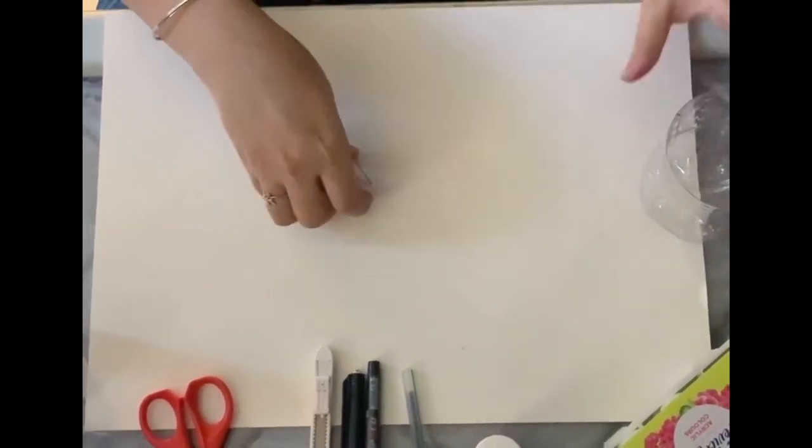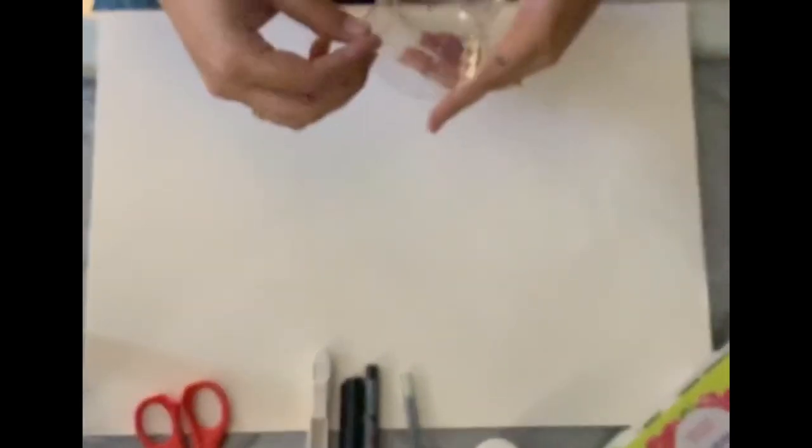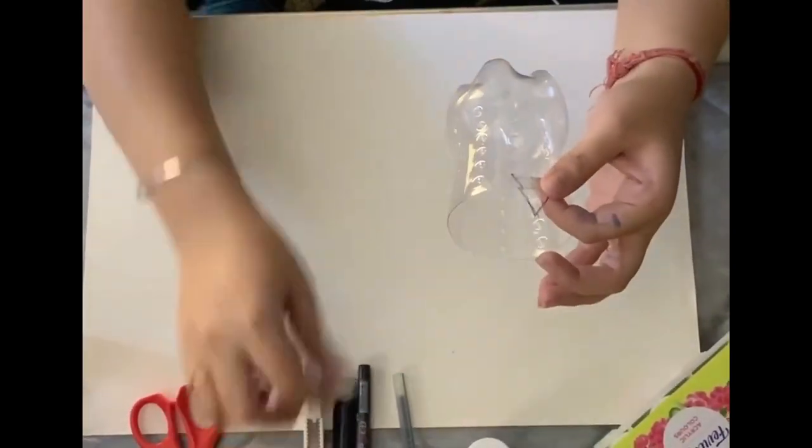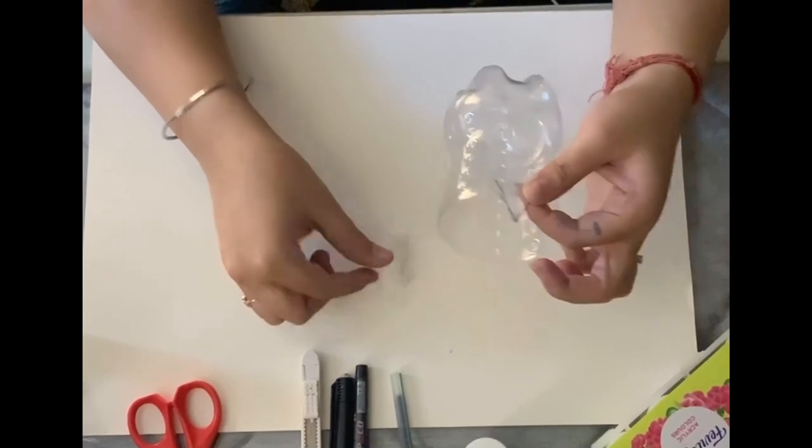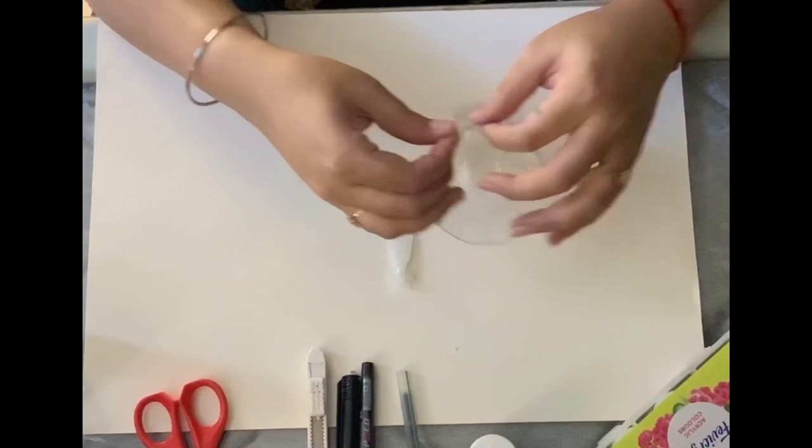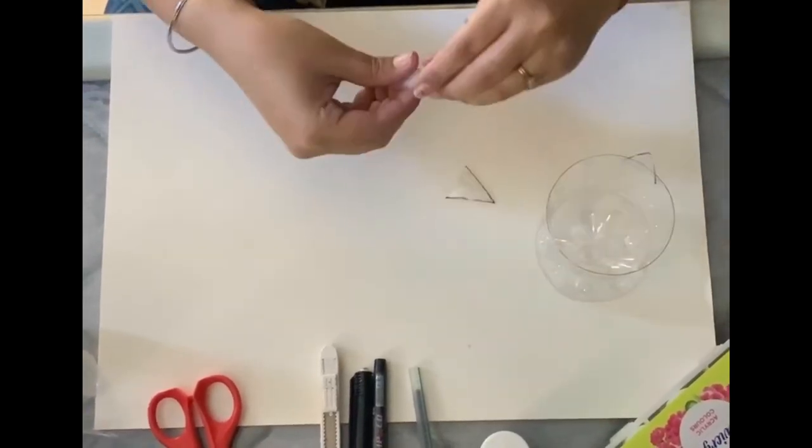Then you have to paste these two triangles on this part here on the top using any kind of glue or fevicol. Now these will look like this. Let me show you how you have to do it.